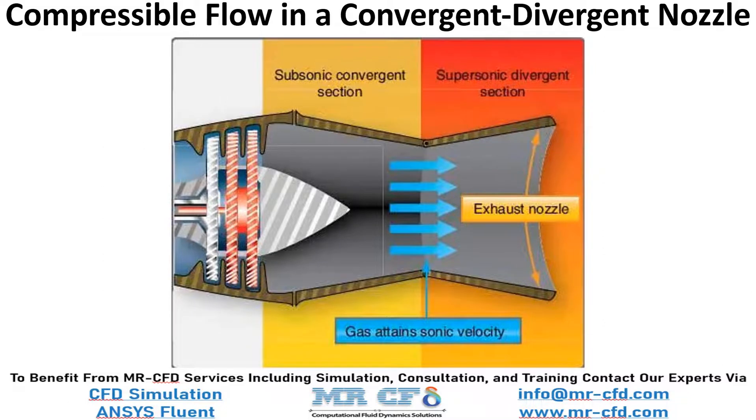In this project, the airflow will enter the convergent-divergent nozzle with a pressure of 70 bars and a Mach number of 0.2 with a temperature of 2735 degrees Kelvin.